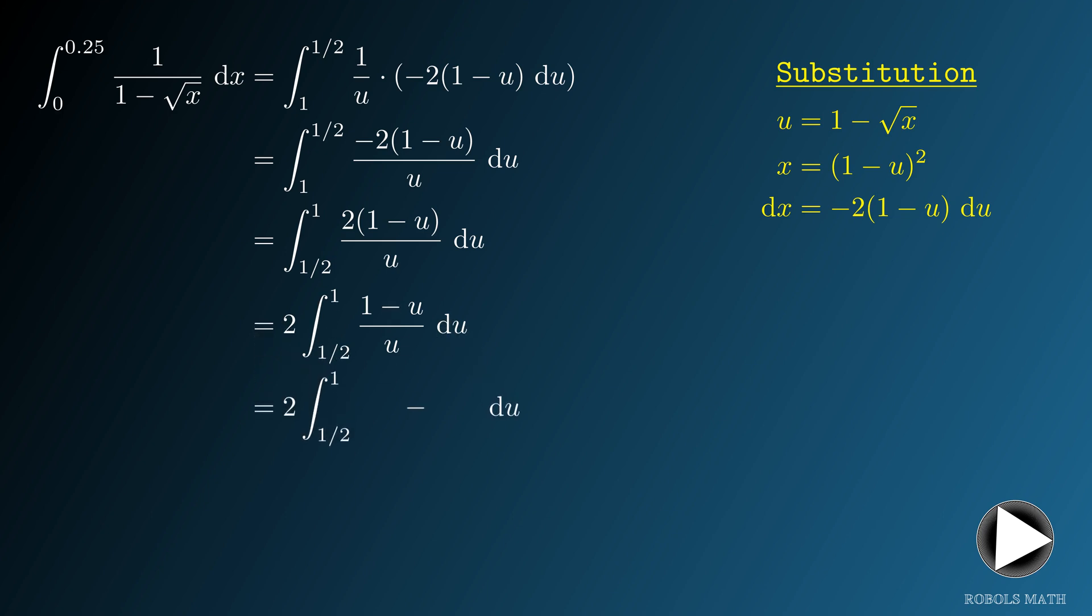Next, we split the fraction as 1 over u minus u over u. We simplify that to get 1 over u minus 1.